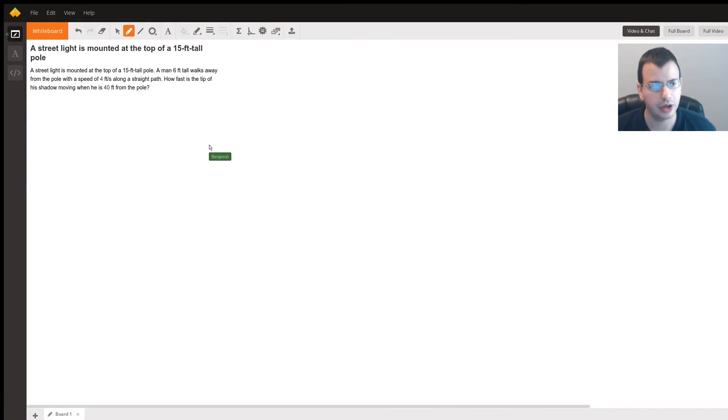mkphysics.com, hope you're doing well. A streetlight is mounted on the top of a 15-foot pole. A man that is six foot walks away from the pole at a speed of four feet per second along a straight line. How fast is the tip of the shadow moving when he is 40 feet from the pole?